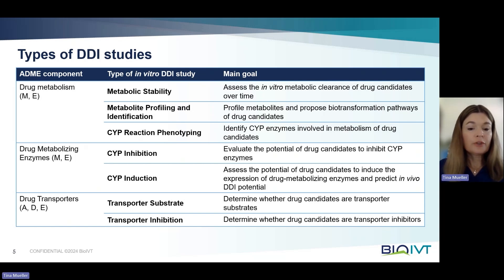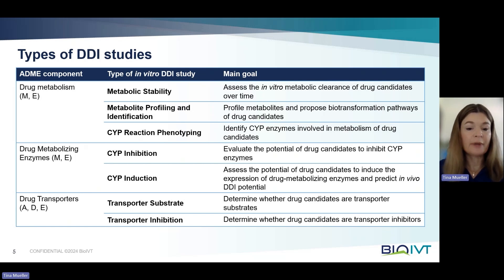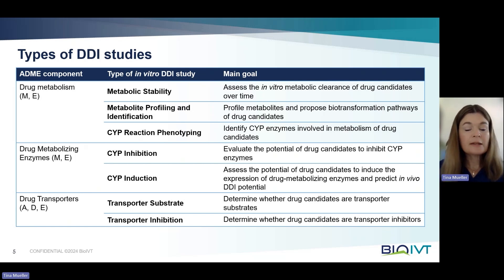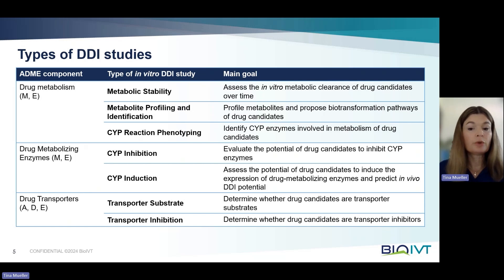For drug metabolizing enzymes, in this quick overview we will focus on CYP inhibition and CYP induction, which evaluate the potential to inhibit or induce CYP enzymes, respectively. And then last, in drug transporter studies, the drug candidates are evaluated for the potential of being either a substrate for a transporter or an inhibitor.